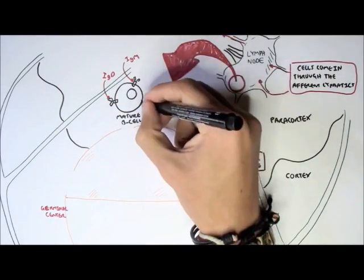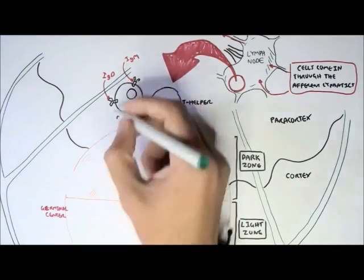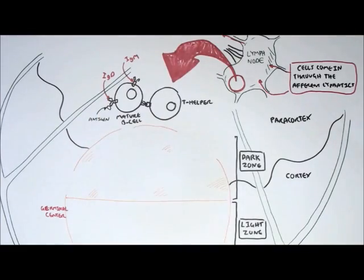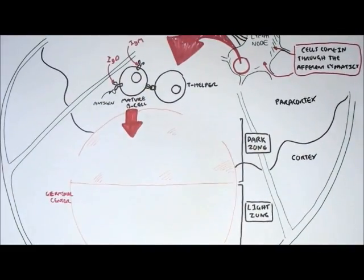Now the mature B-cell, which is usually abundant in the cortex, will move to the paracortex to get activated by T helper cells, or alternatively it can get activated by an antigen of a pathogen or even a follicle dendritic cell.